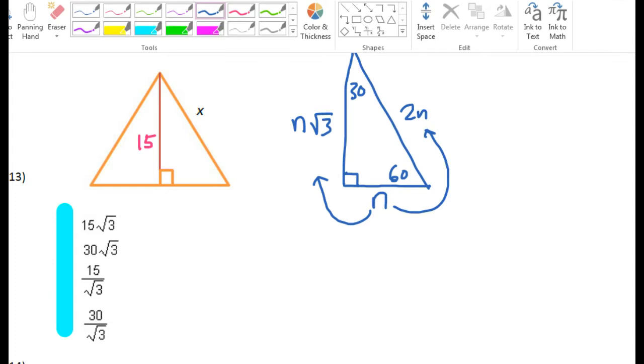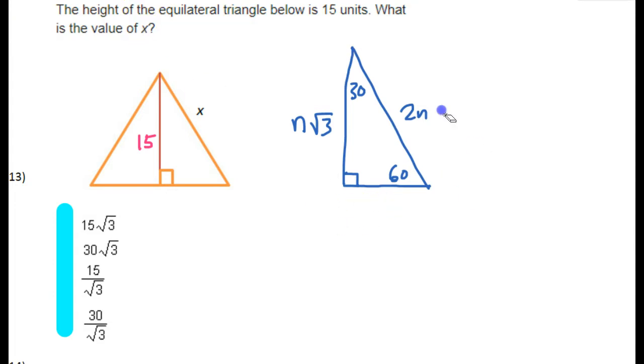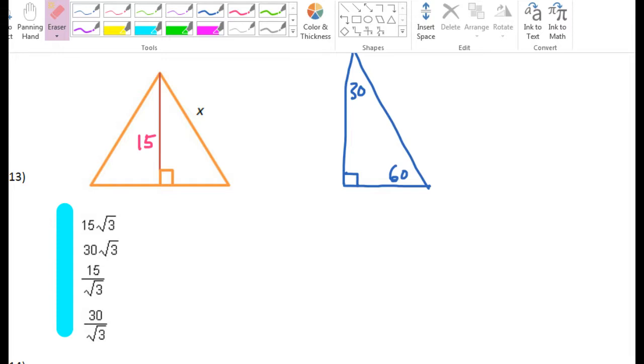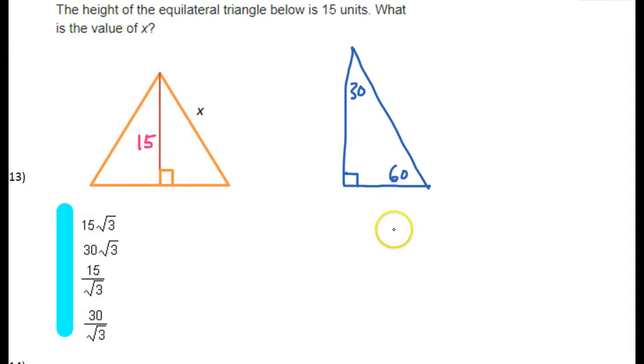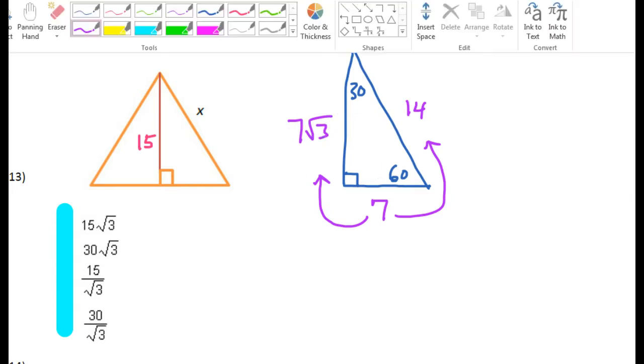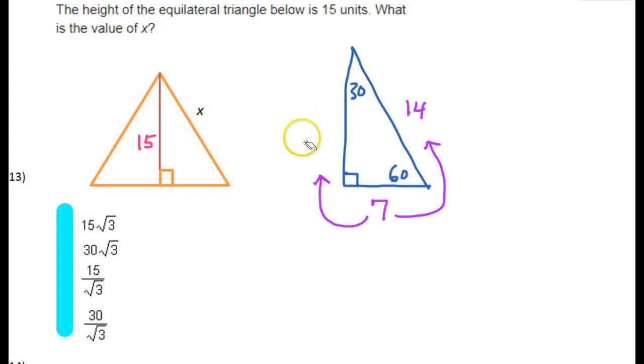So, for example, if I knew that the shorter leg was, let's say, 7, then the hypotenuse would be 14, 2 times 7. And then the long leg would be 7 radical 3. So we can use that knowledge to help us find x.